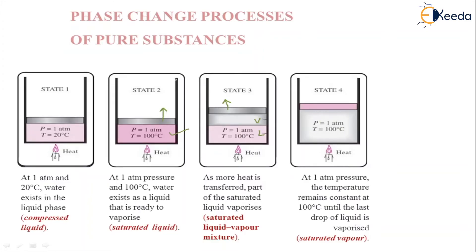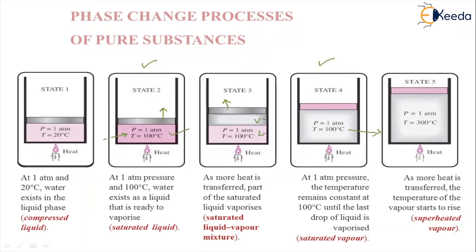The saturated liquid and saturated vapor states are very transient — even a small amount of heat added converts the substance to the mixture phase, so staying at these two states is very difficult in practical cases. The last stage is the superheated vapor: even if I keep on adding heat past the saturated vapor point, the temperature continues to increase — for example, to 300°C — and that is your superheated vapor. This completes the phase change stages understood through the piston-cylinder example.